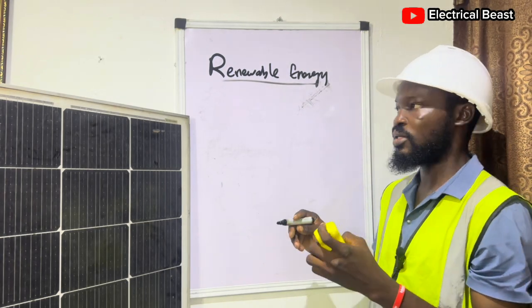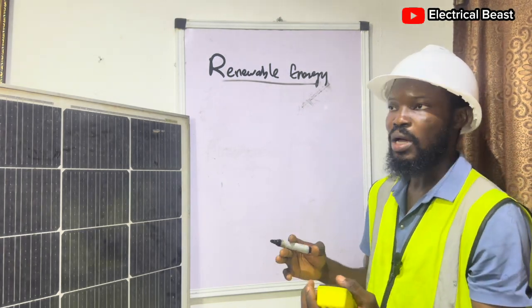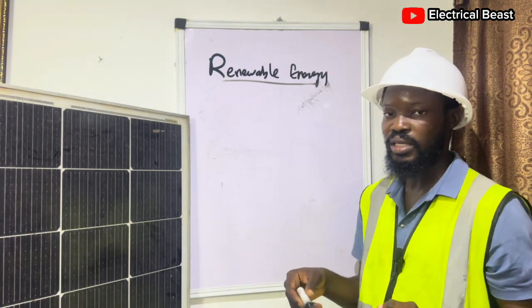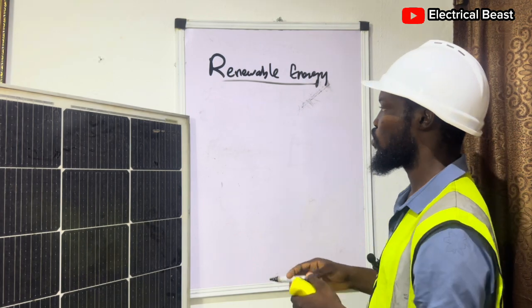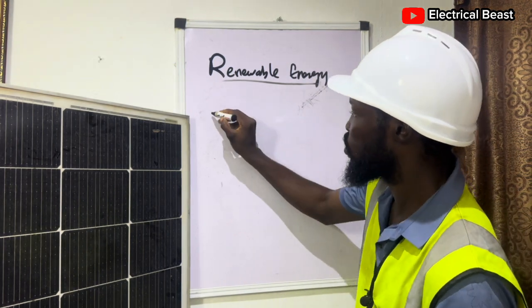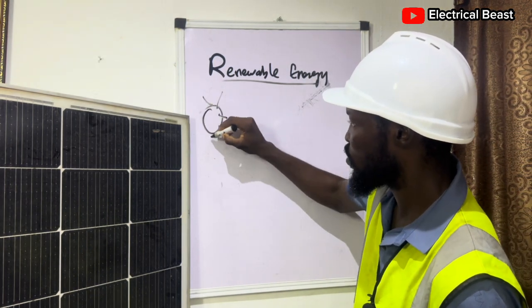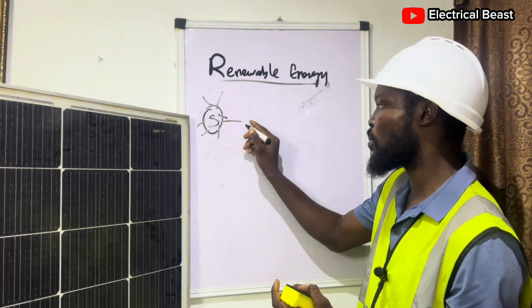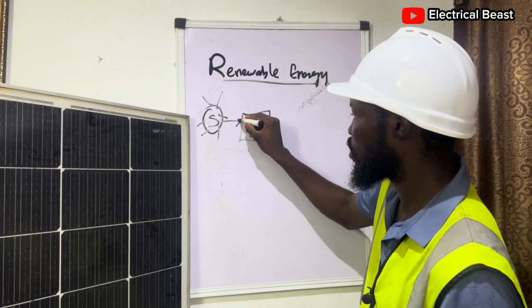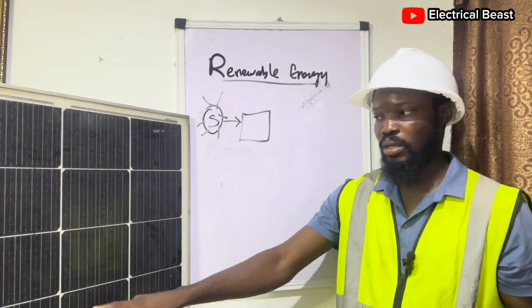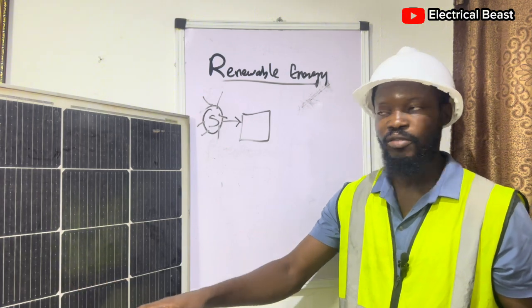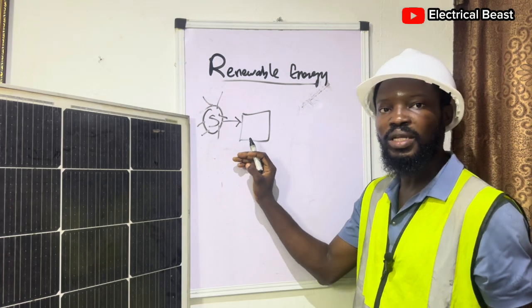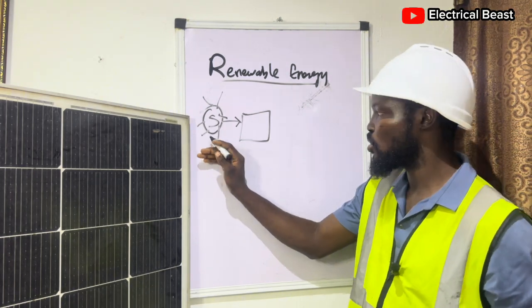I'm going to use a block diagram to represent the flow chart — how you harness energy from the sun through solar panels and get power in return. From the sun you can generate energy through solar panels. An example of a solar panel is a PV photovoltaic cell. These cells are able to generate energy from the sun.